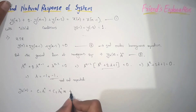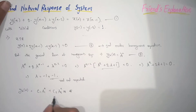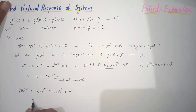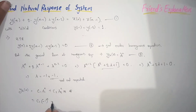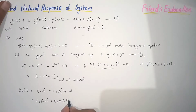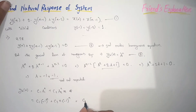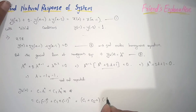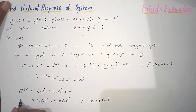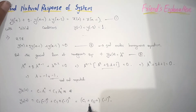Since we only have two roots, this is enough. We write: C1·(-1)^n + C2·n·(-1)^n. Taking (-1)^n as common, we get: (C1 + C2·n)·(-1)^n. This is the homogeneous equation.